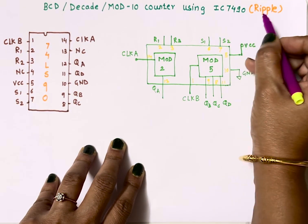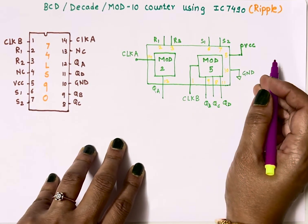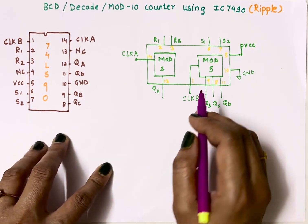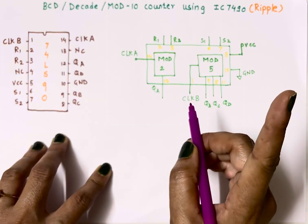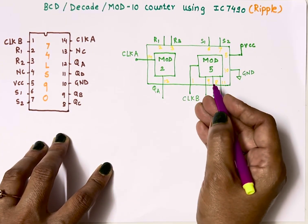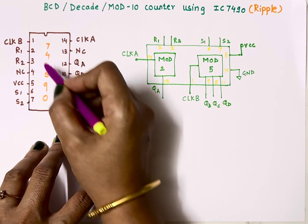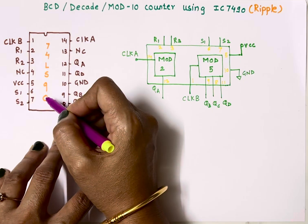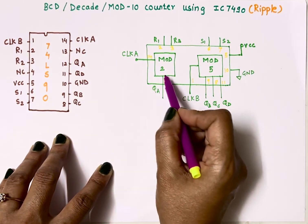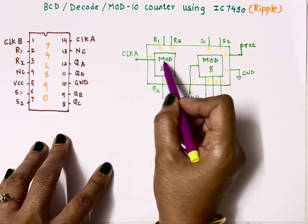IC7490 is a ripple counter IC. Ripple counter means asynchronous counter, so in asynchronous counter external clock is connected to one flip-flop and output of first flip-flop acts as clock input to second flip-flop. Here this is pin diagram of IC74LS90.